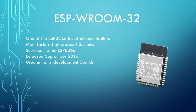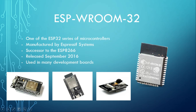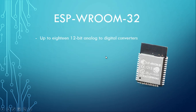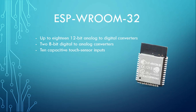The ESP-WROOM-32 is used on many development boards — this is an ESP32 development kit, a development port, and there is also an ESP32 camera module. The ESP-WROOM-32 has up to 18 12-bit analog-to-digital converters and there are also two 8-bit digital-to-analog converters. It has 10 capacitive touch sensor inputs and four SPI bus channels.